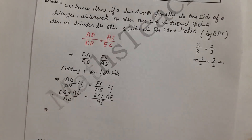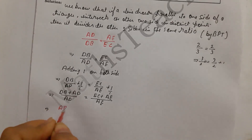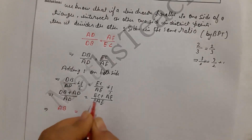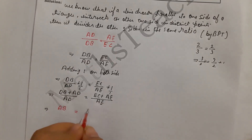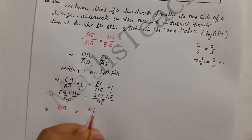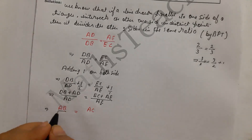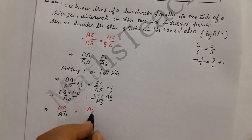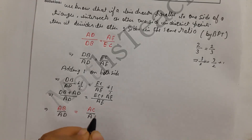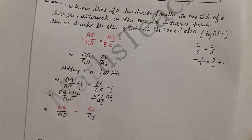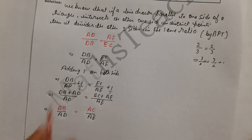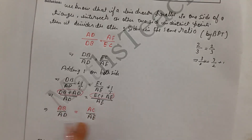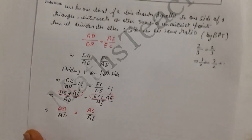DB plus AD is AB, and EC plus AE is AC. So we get AB upon AD equals AC upon AE. This is our change — we have now expressed the relationship in terms of AB and AC, as shown in the figure.